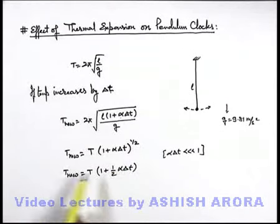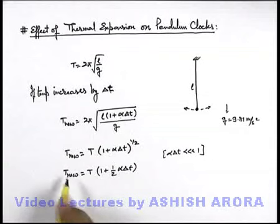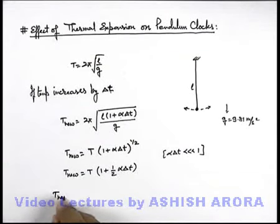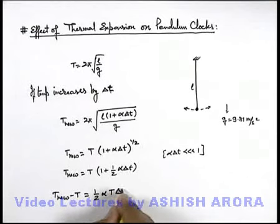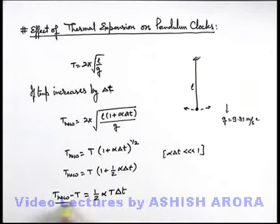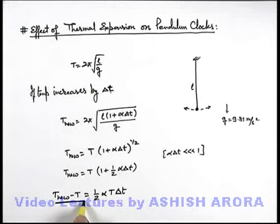Taking 1 to the left-hand side, we get T_new − T = ½αTΔT. This is the difference in time period, or the increase in time period, due to the change in temperature.